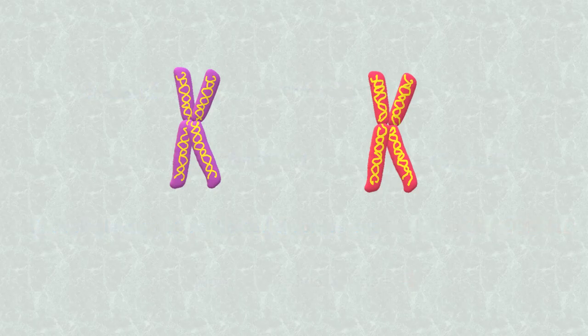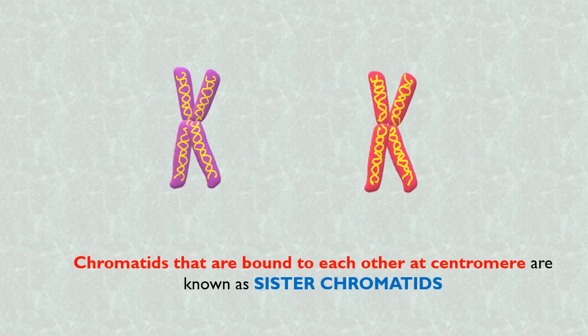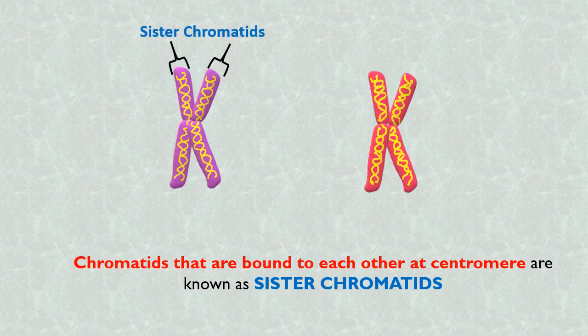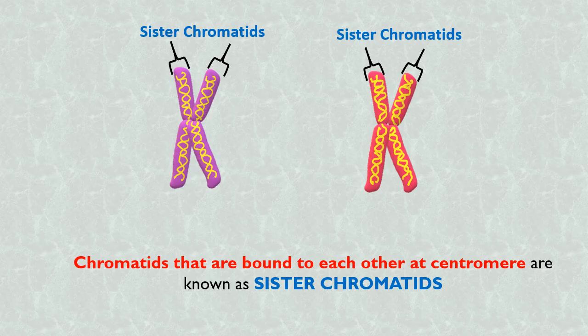Those identical chromatids that are bound to each other at the centromere are known as sister chromatids. So these two chromatids are sister chromatids. And similarly, these two chromatids are also sister chromatids.